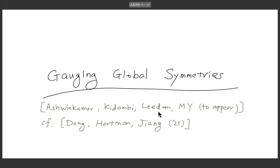Once you have the global symmetry, you can also try to gauge it. That's the paper appearing this week. It turns out the short answer is that if you gauge the global symmetry in the bulk, that's translated into orbifold folding of the CFT. Then you get the sum of twisted sectors and non-twisted sectors — and that's what you find in the CFT partition function.